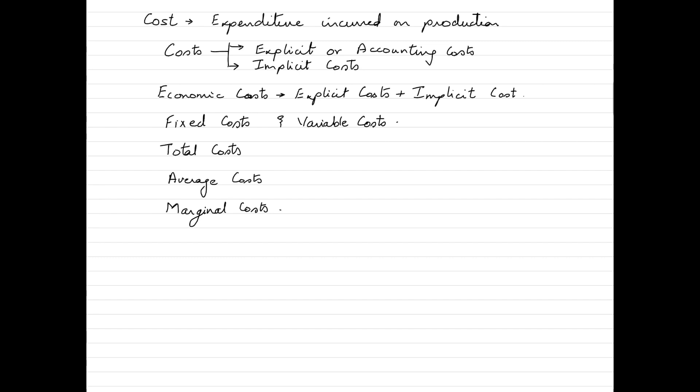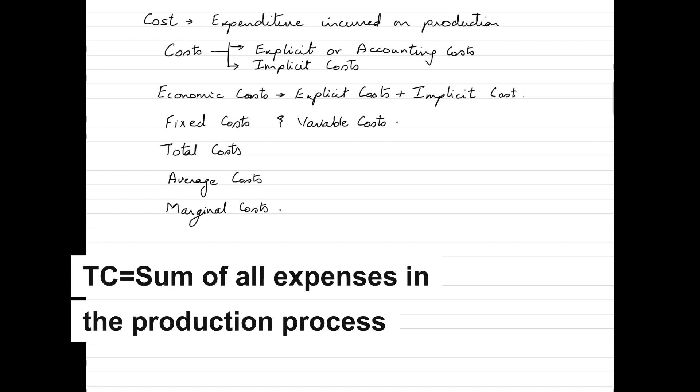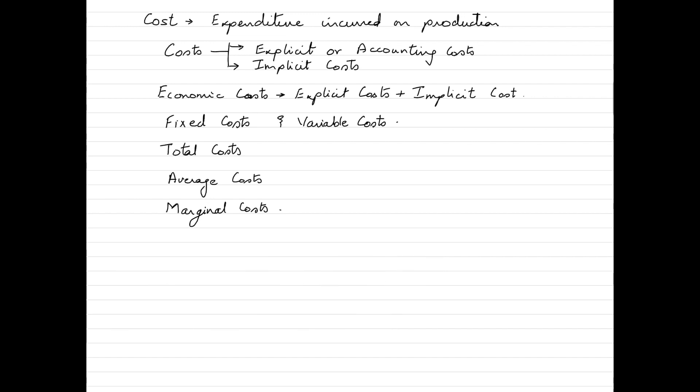When we talk about total costs, this is the sum of all costs incurred by the firm in the production of a particular level of output. The next is average costs or AC. Let me just write that down for you. Total costs is referred to as TC, average costs is referred to as AC and marginal cost is referred to as MC.